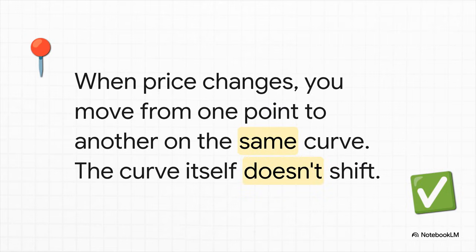Think of it this way. Let's say your favorite cheese gets more expensive. You might go from buying two packages a week down to just one. You've just moved to a different spot on your existing demand curve — a lower quantity because of a higher price. But your overall love for that cheese hasn't changed. The curve itself hasn't budged an inch.